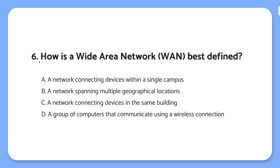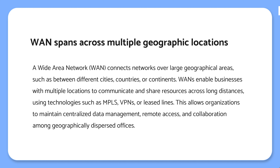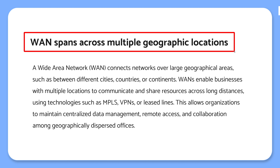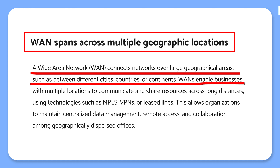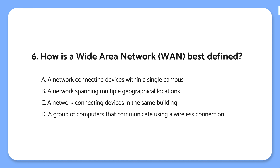Question 6: How is a wide area network best defined? The knowledge point is that a WAN spans across multiple geographic locations. A WAN connects networks across large distances, like between cities or countries, letting businesses share data and communicate between different locations even if they're far apart. The correct answer is: a WAN is a network that covers a large geographical area, like connecting offices in different cities or countries.